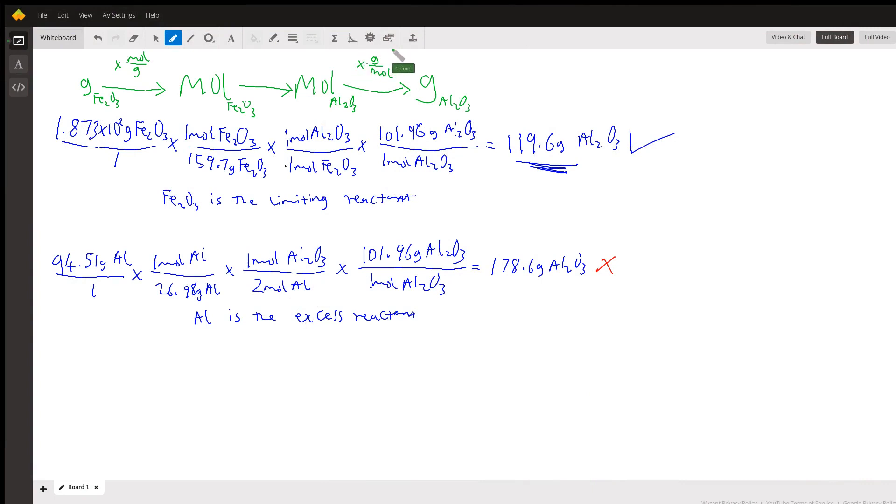This is the solution to the question. We had two reactants: iron three oxide and aluminum. We need to know what reactant will produce the least amount of the product. Based on our calculation, iron three oxide produces the least amount of aluminum oxide, and the right answer is 119.6 grams.